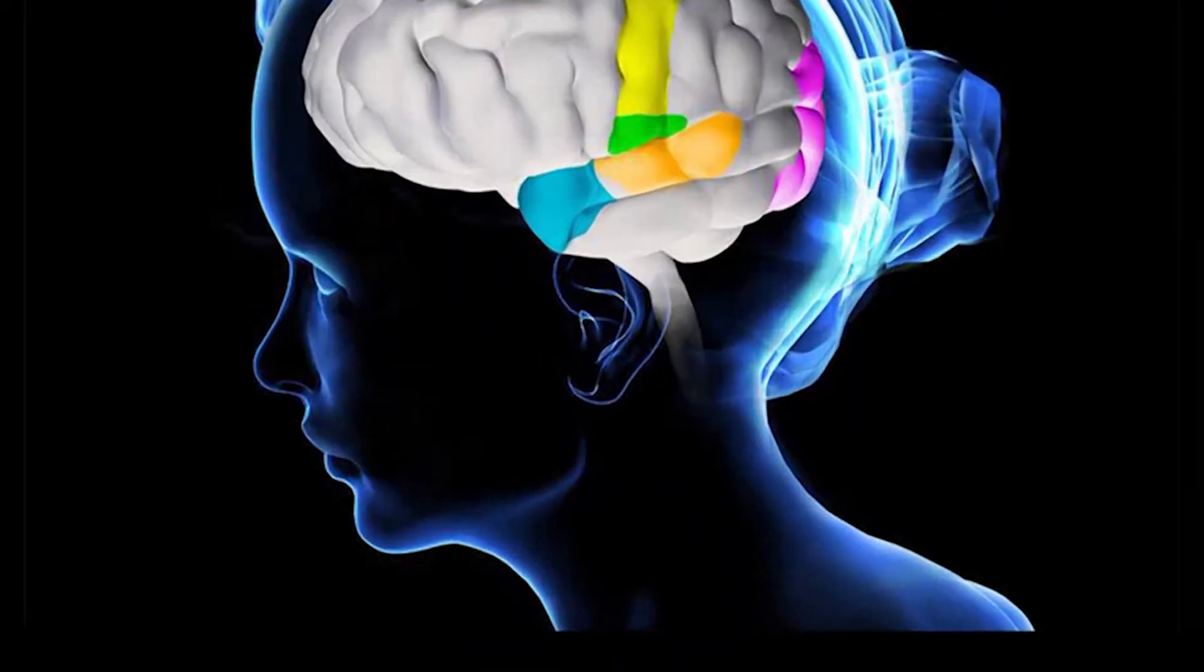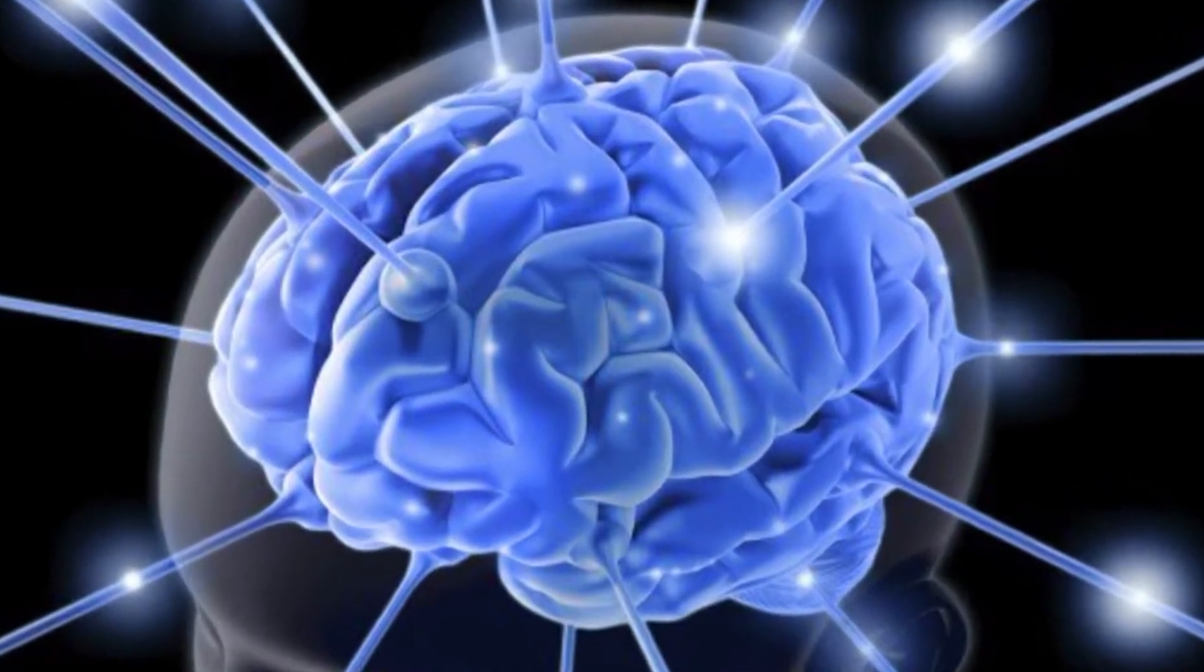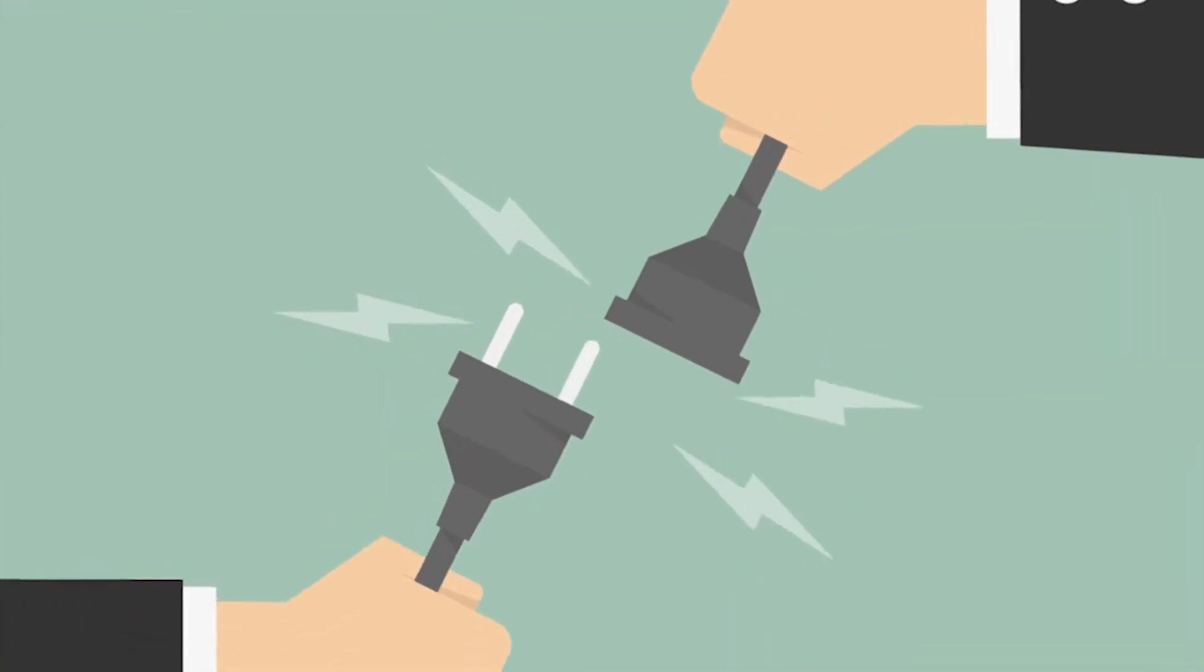That squishy organ which sits between your ears, better known as your brain, communicates mainly via electricity. The light you see, the sounds you hear, and the food you taste all turn into electricity.